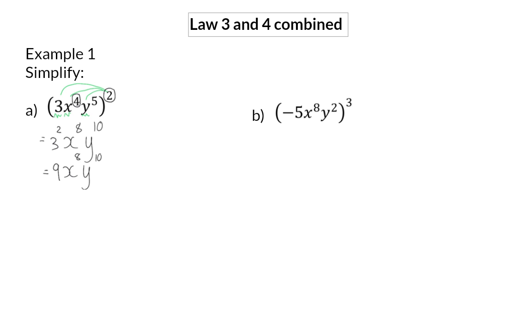In B, we once again have three different bases. And the exponent on the outside has to be applied to all three. For the first base of 5, it is important to realize that minus 5 will now be to the power of 3. And for the variables, we will once again also use the third law. So we will have 8 times 3 is 24. And for y, we will say 2 times 3, and that will give us 6.